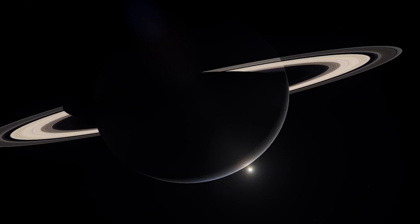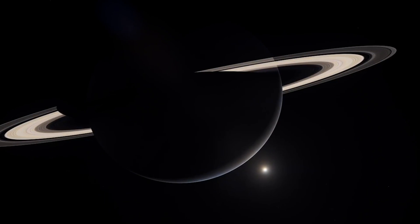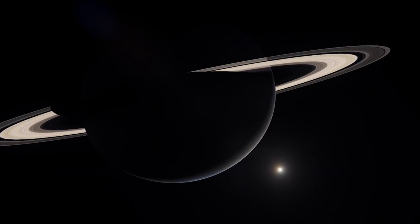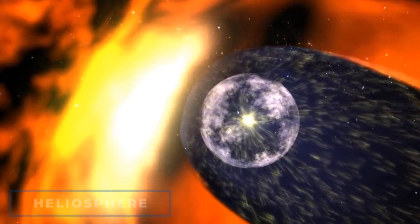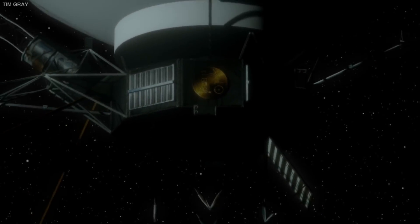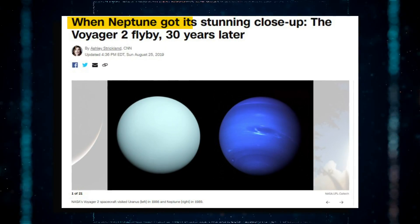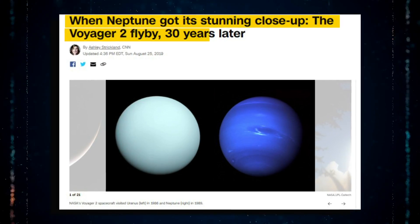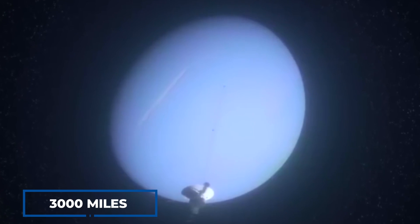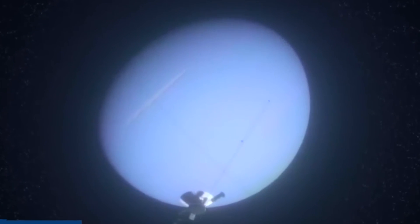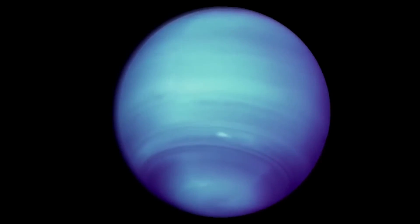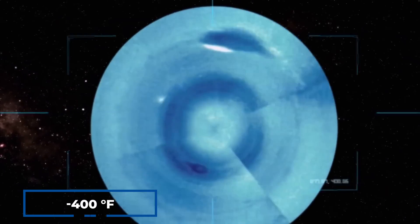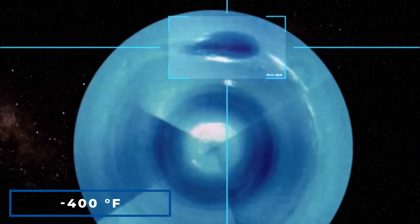However, Saturn was the final planet that both probes would see together before being separated. Voyager 1 began an ecliptic turn towards the heliosphere, but Voyager 2 continued on to two more planets as scheduled. By August 1989, Voyager 2 had arrived at Neptune, passing within 3000 miles of the planet's north pole. The flyby revealed the solar system's coldest planetary surface, with temperatures reaching minus 400 degrees Fahrenheit.